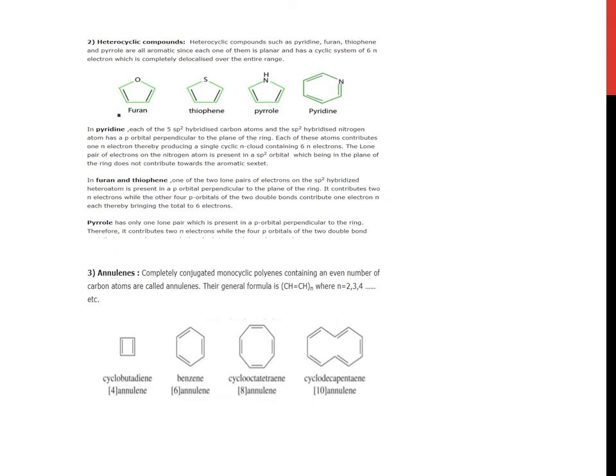Heterocyclic compounds: heterocyclic compounds such as pyridine, furan, thiophene, and pyrrole, all are aromatic since each one of them is planar and has a cyclic system of 6 pi electrons which is completely delocalized over the entire ring.